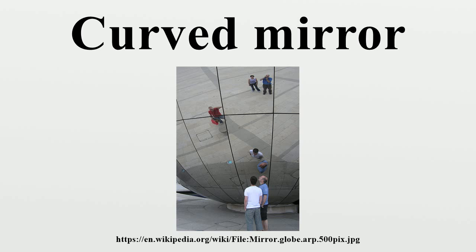Similar devices are sold to be attached to ordinary computer monitors. Convex mirrors make everything seem smaller but cover a larger area of surveillance. Some camera phones use convex mirrors to allow the user to correctly aim the camera while taking a self-portrait.